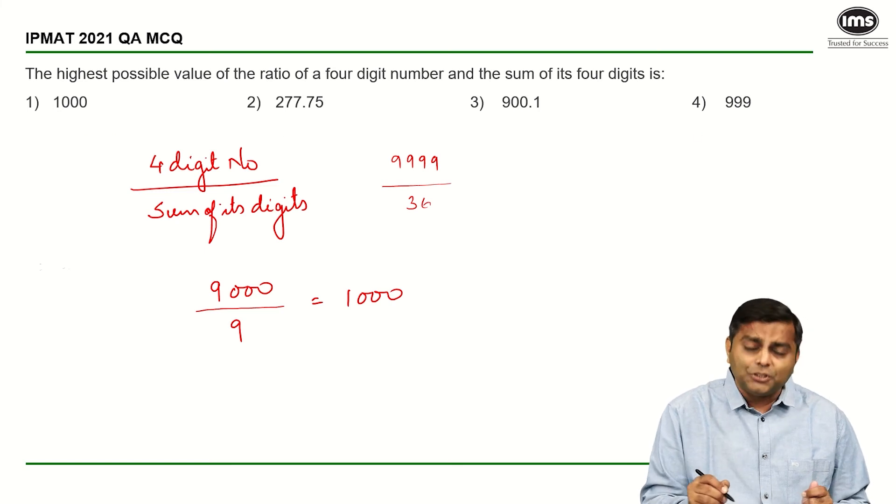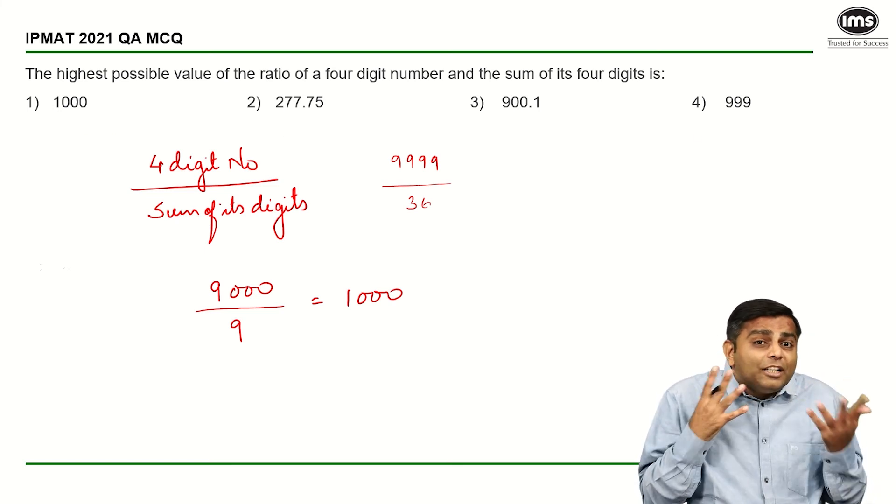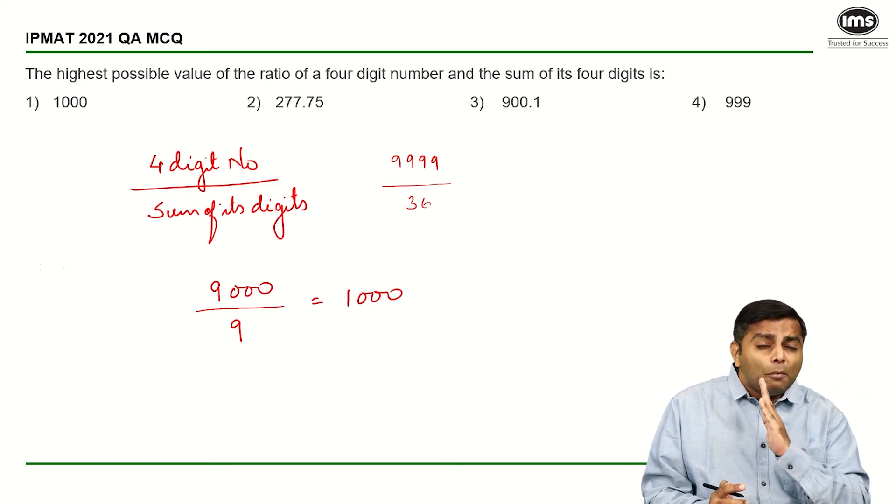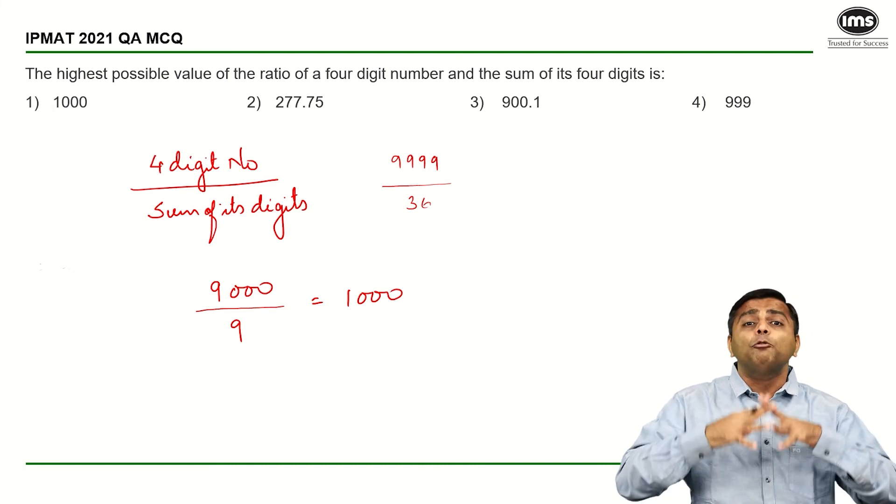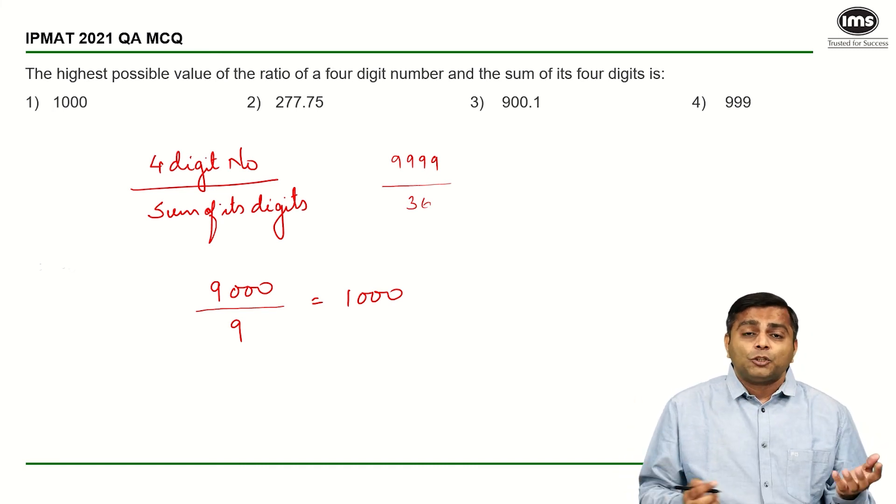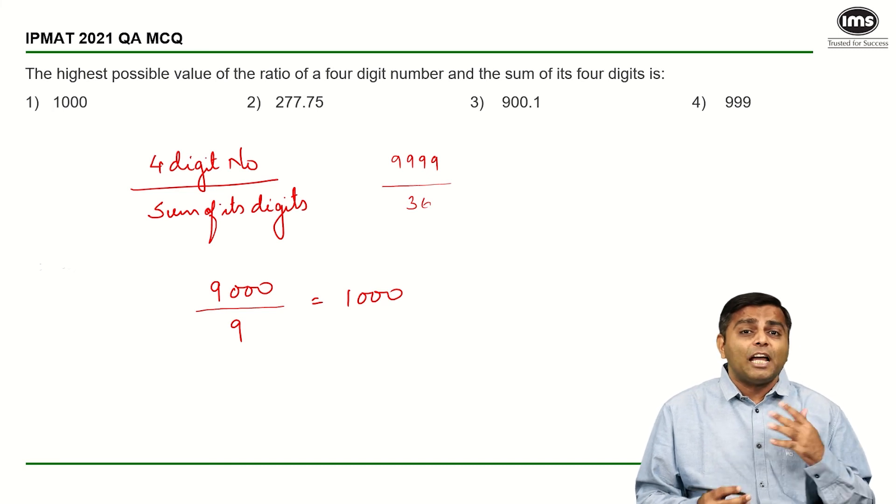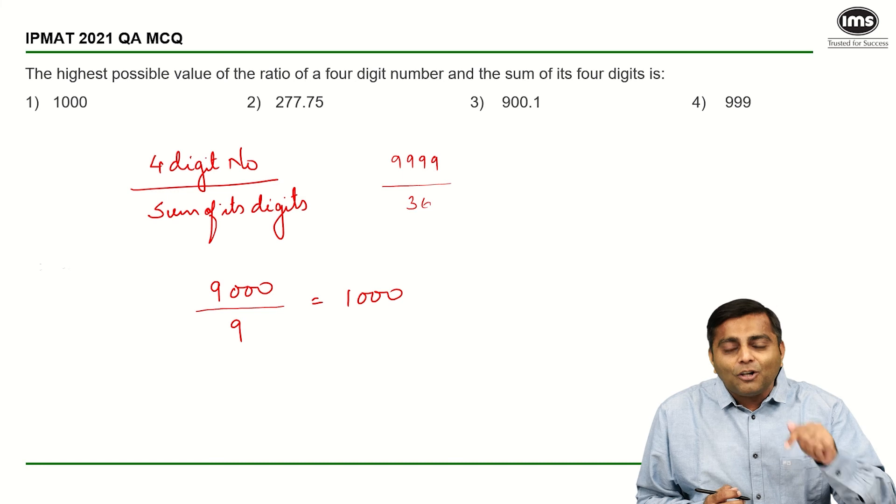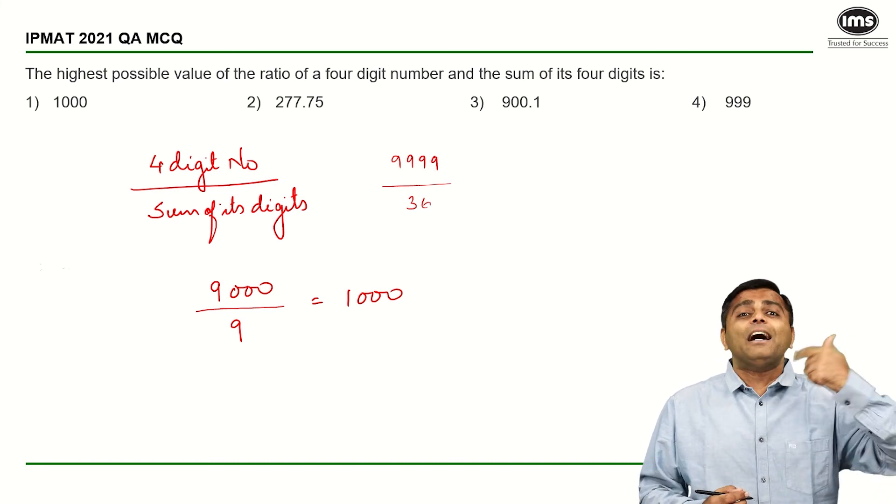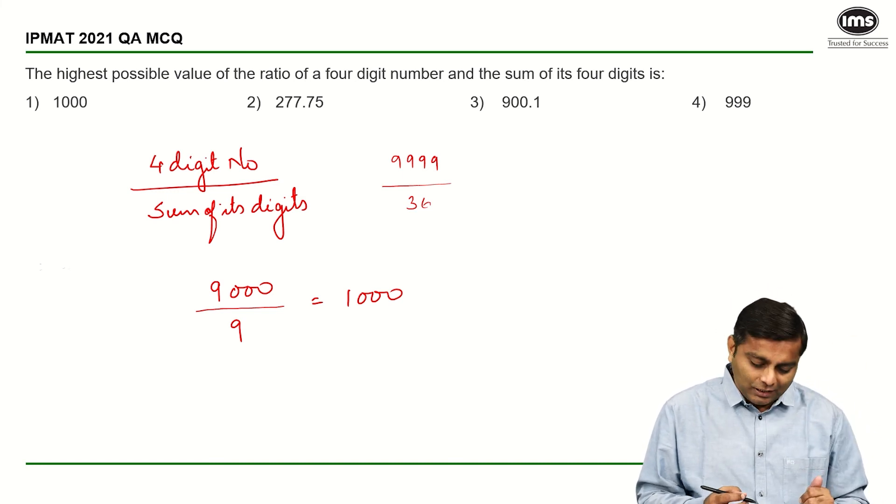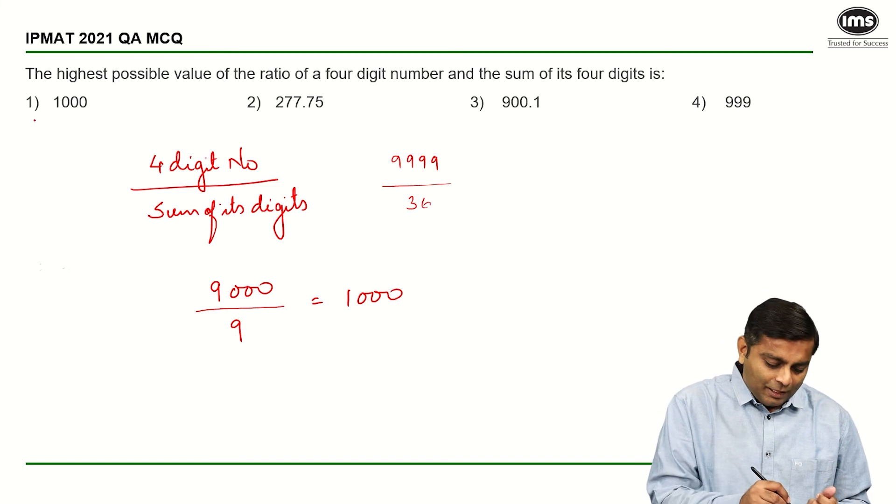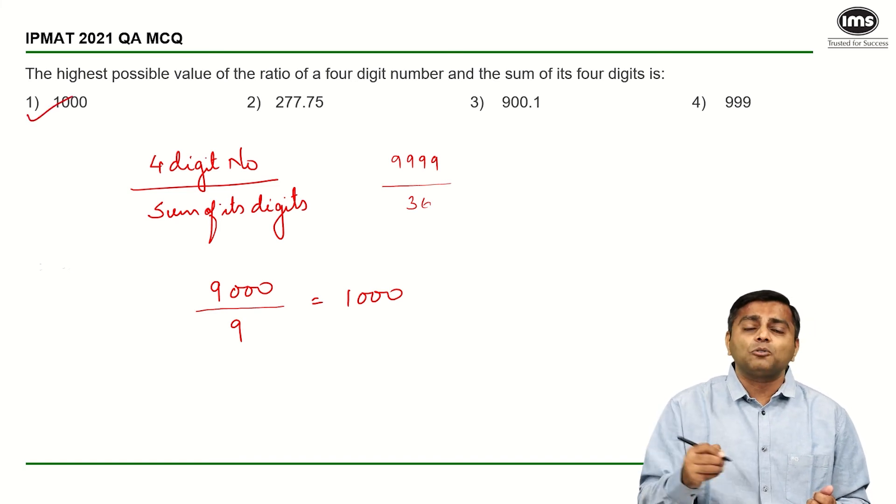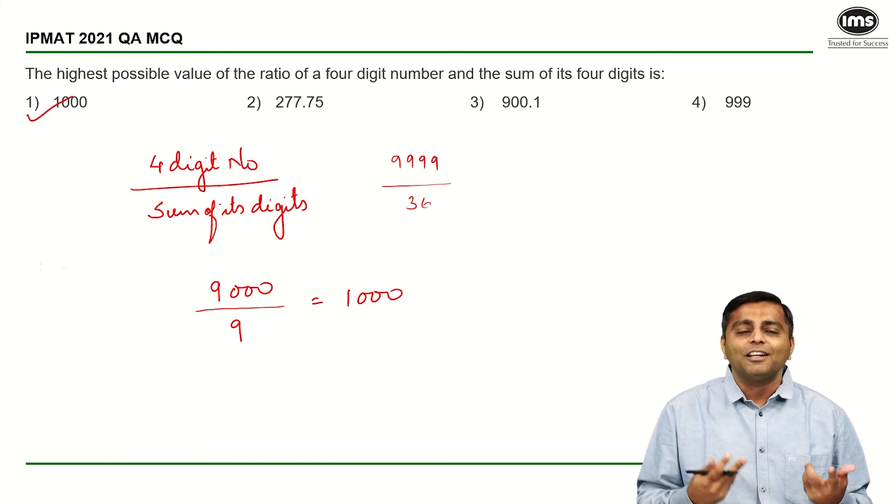And if you look at your options, I am not really sure if this is the best way, but this is the foolproof way of doing it. Had I not been given the options, I would not have been really sure of my answer. But because the options are given and the highest possible option is 1000, I think this method works. So I have got 1000 as my answer and that should be our option.